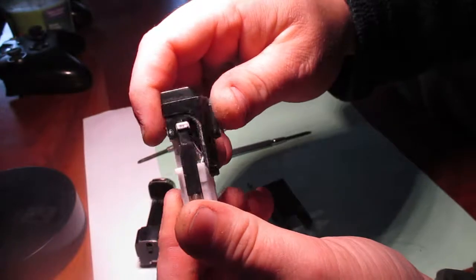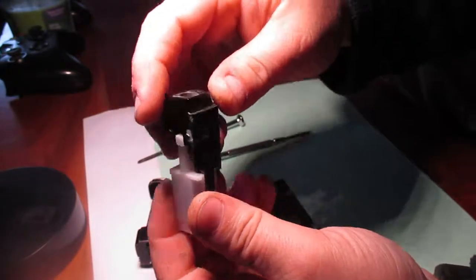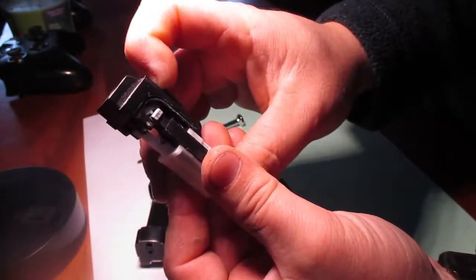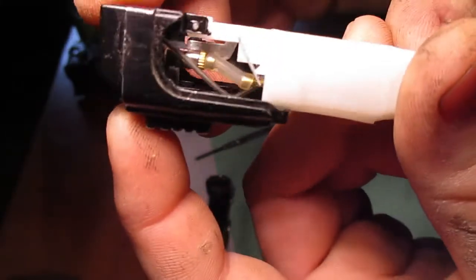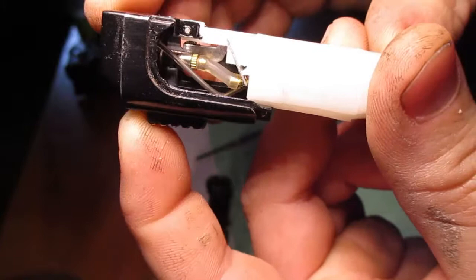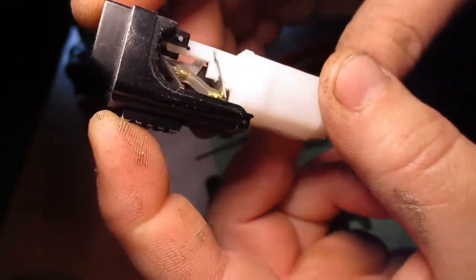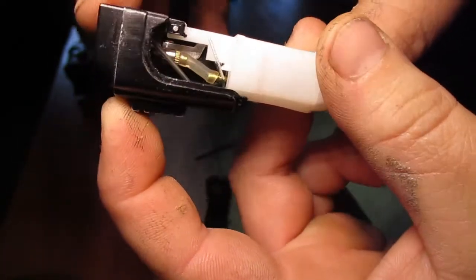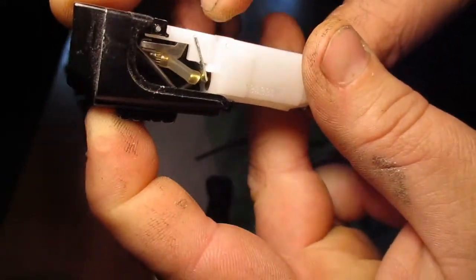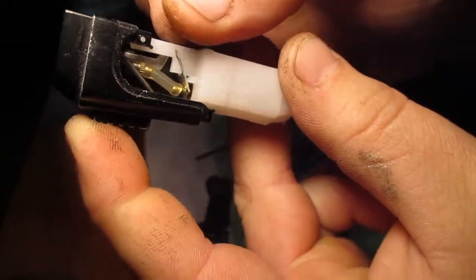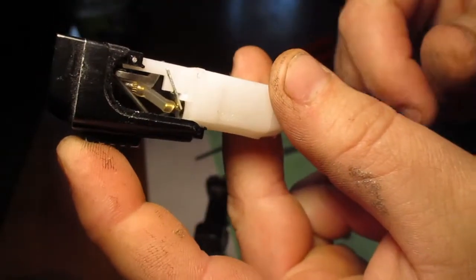This is a butane lighter. So, let's take a look. When you push this plunger down for the light, it makes a spark, and it pushes these two levers down, which pushes the nozzle up, which allows the fluid to go up through.